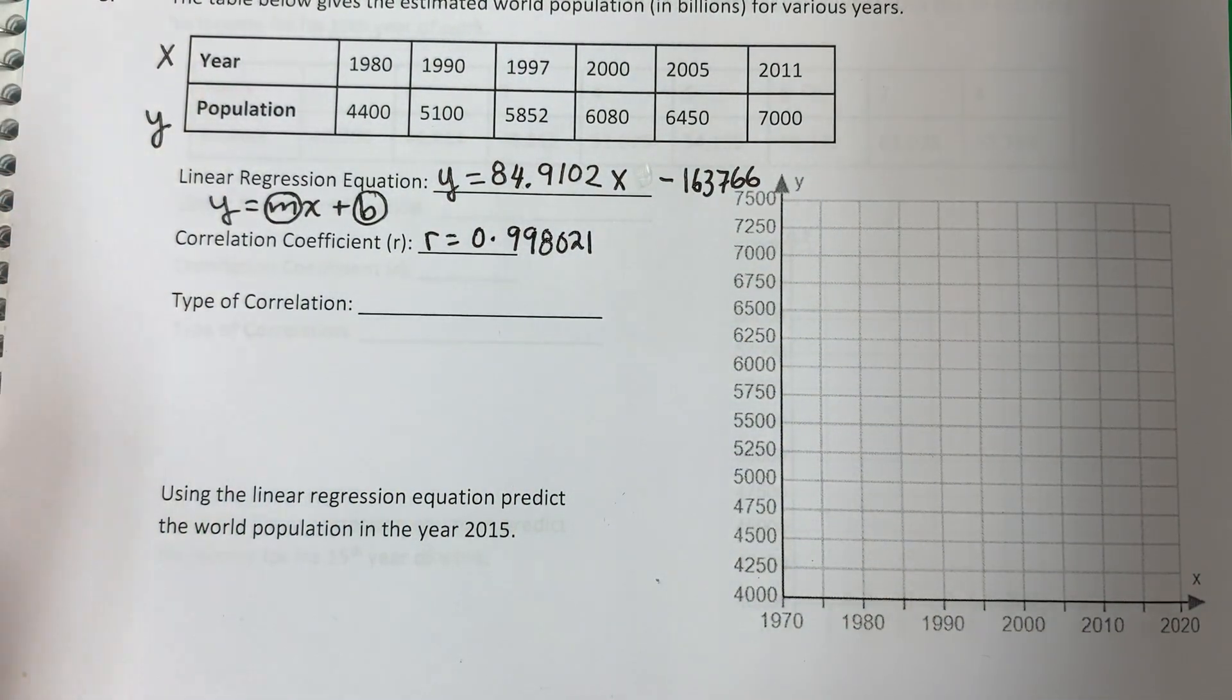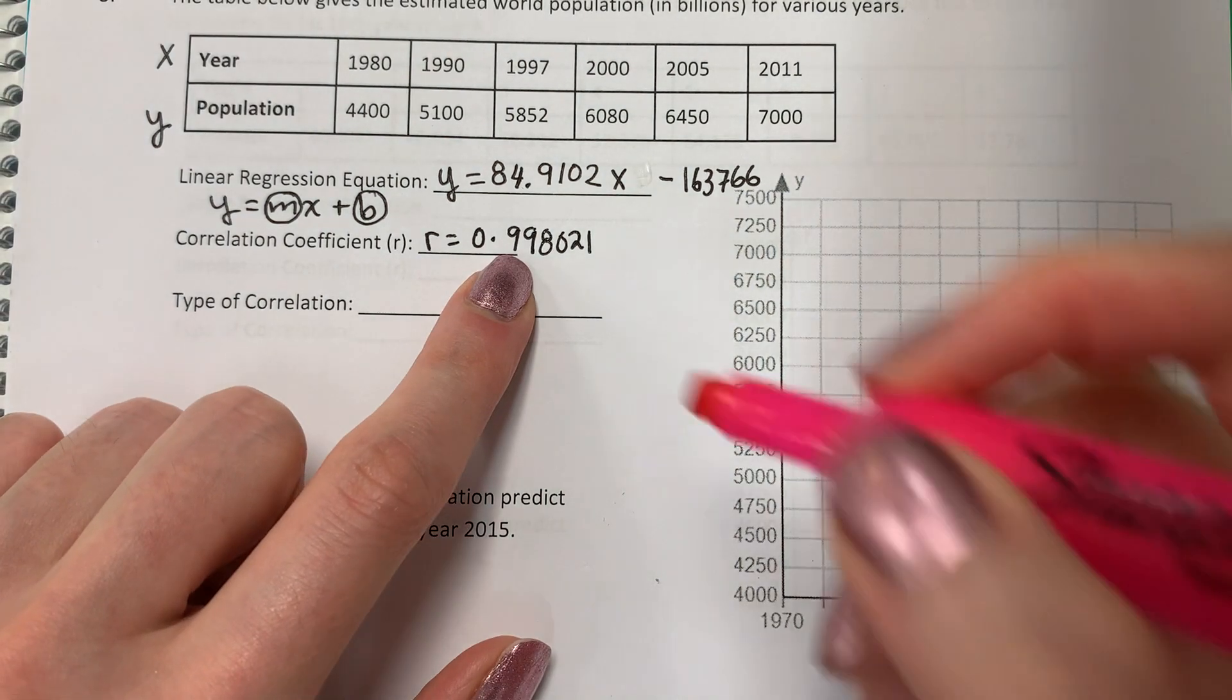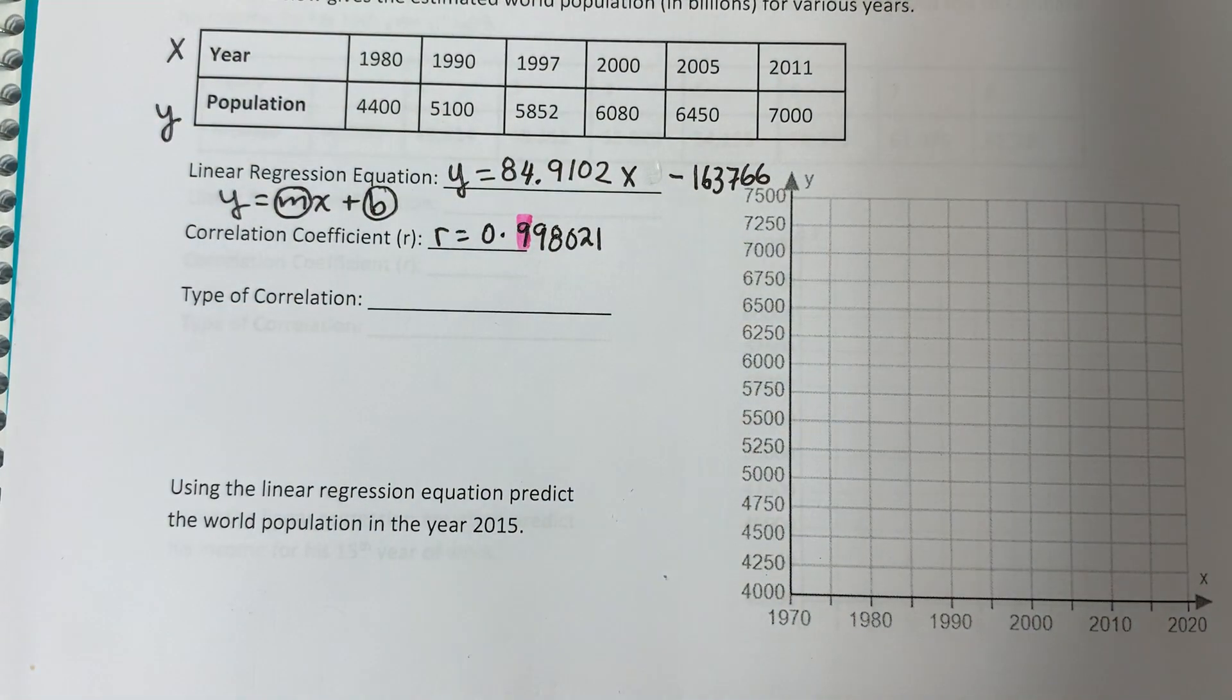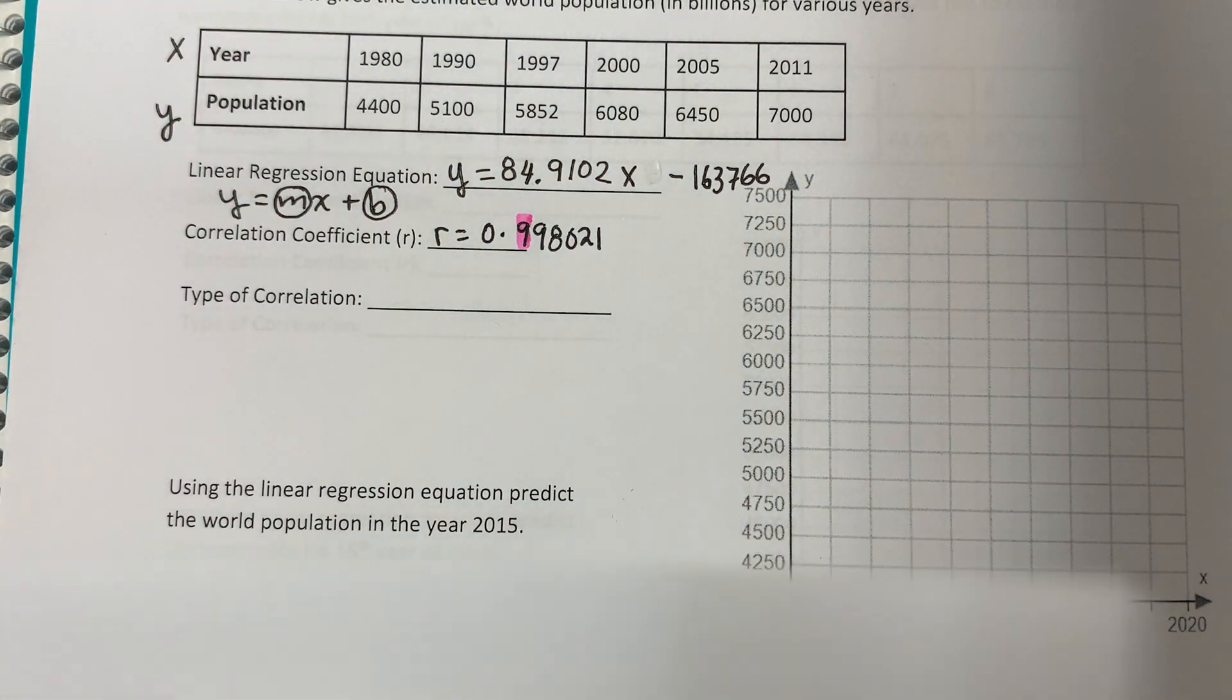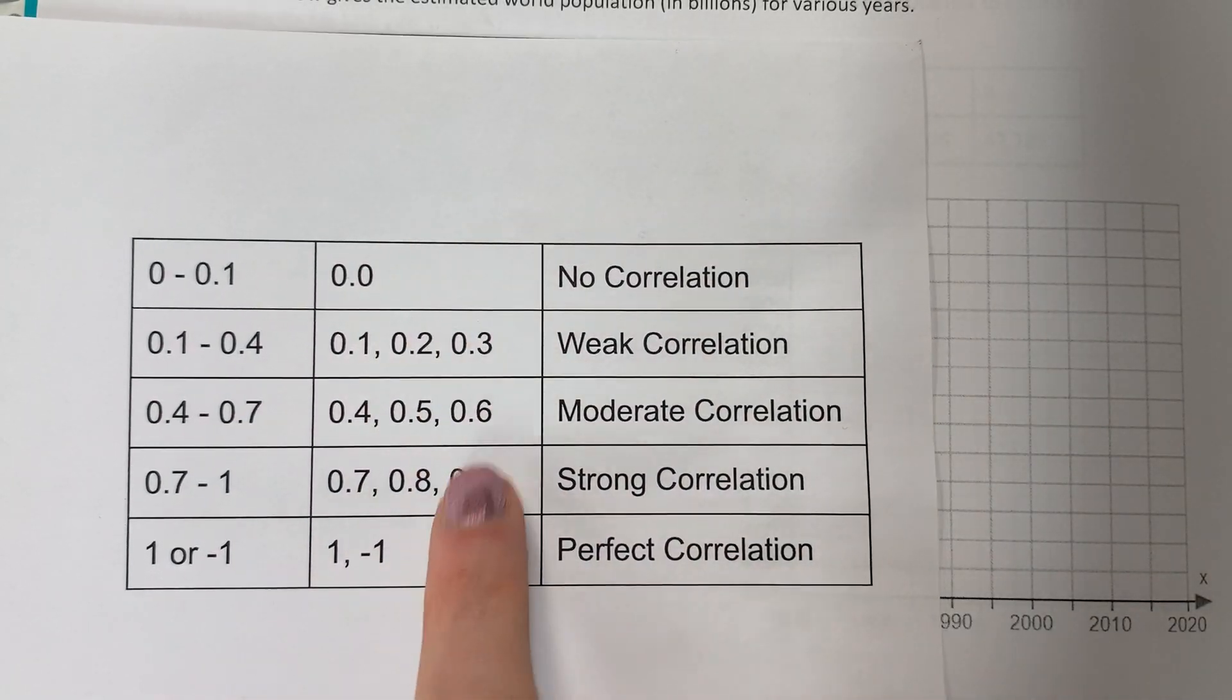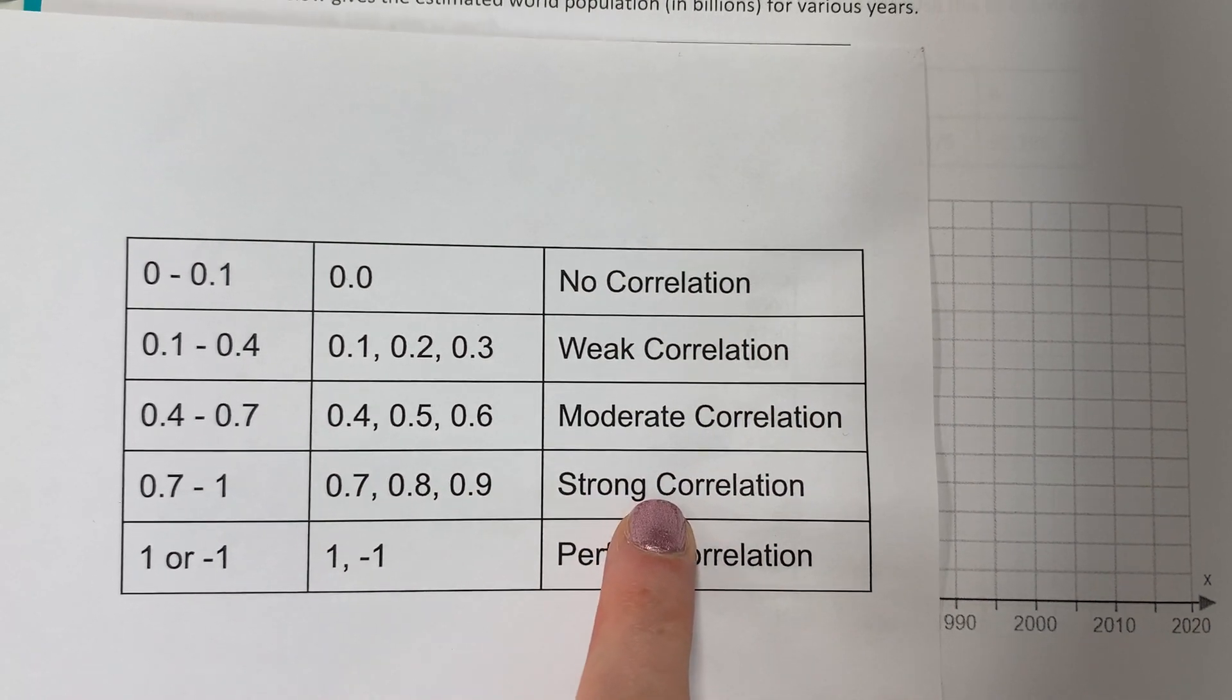And now the type. El tipo de correlación. Which number is important here? ¿Cuál número es importante aquí? The number directly after the point. El número directamente después del punto. So it's 9, 9. 0.9. Look in your table. 0.9. That's right here. Strong correlation.